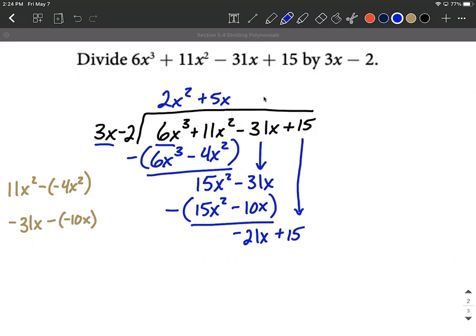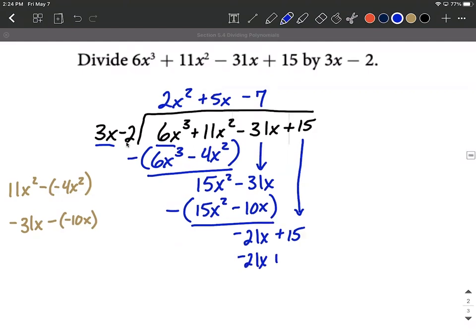3x times what makes negative 21x. So 3 times negative 7 is going to make negative 21. We already have an x here. We want to end up with an x so I don't need any more x's. Negative 7 times 3x is sure enough negative 21x.